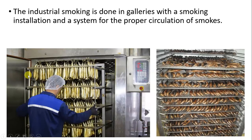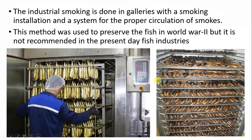In hot smoking, fresh fishes are used and subjected to about 130 degree Celsius on a strong fire, and then placed on hot smoke at 40 degree Celsius. Industries use smoking in galleries with a smoking installation and a system for proper circulation of smoke. This method was used for preserving fish in World War 2 also, but it is not recommended in the present-day fish industries.